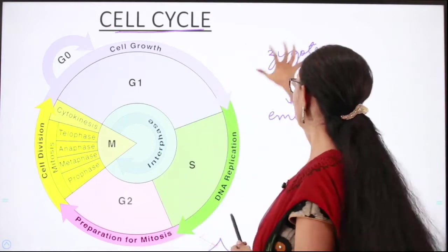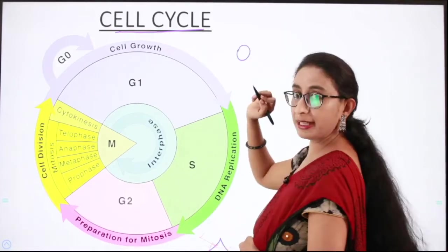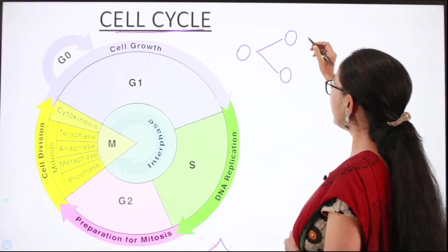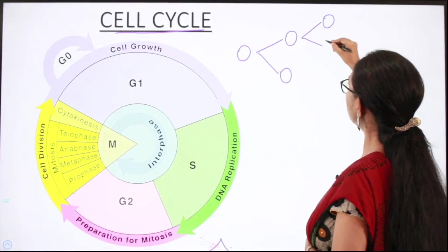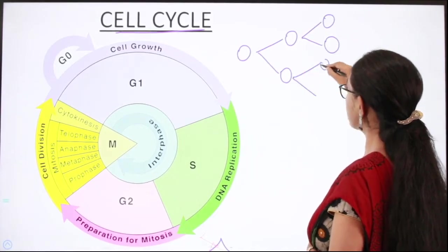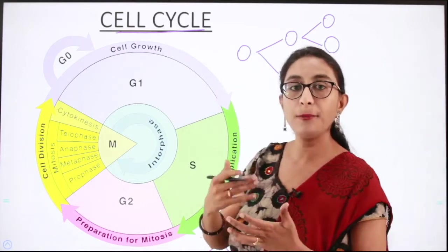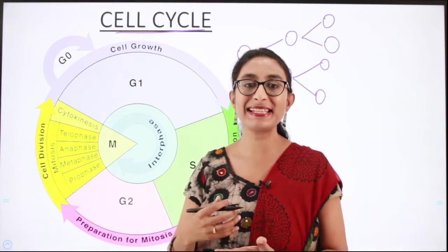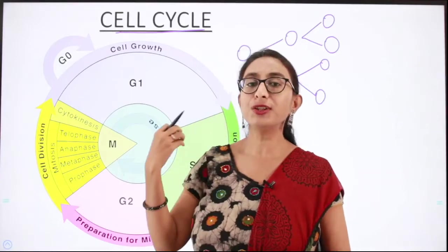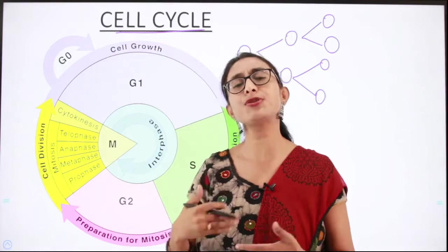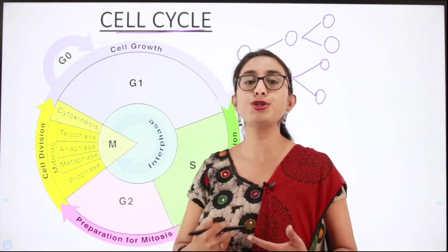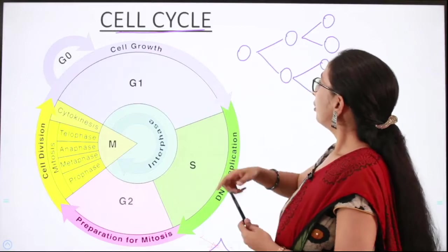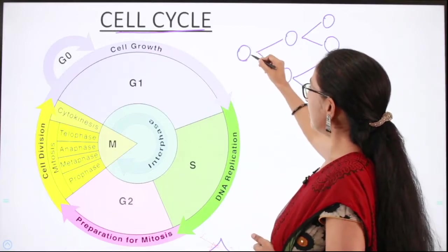One cell divides into two — the parent cell divides into two daughter cells. These daughter cells further undergo division giving rise to four cells. Each newly formed cell becomes a parent cell and gives rise to two daughter cells, and those daughter cells again become parent cells. This process of cell growth and cell division continues several times to give rise to a huge population of cells.